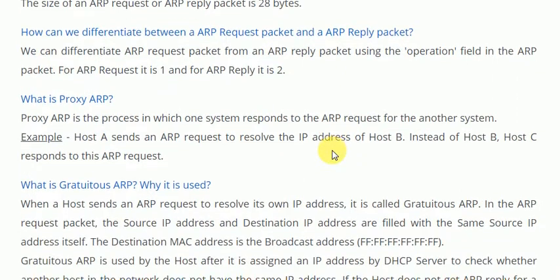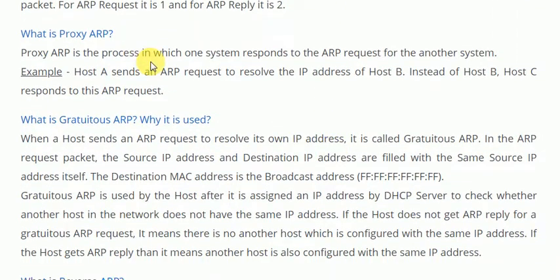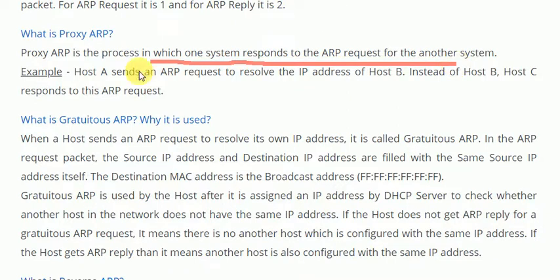What is proxy ARP? Proxy ARP is the process in which one system responds to the ARP request of another system. This means that if you are sending an ARP request for one device but a different device responds to it, that is called proxy ARP.